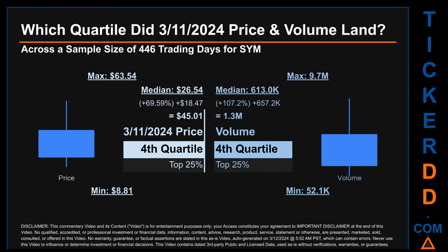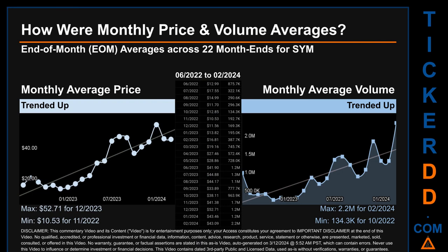Quartiles tell us about the spread of a data set by breaking it into quarters, just like how the median breaks the set in half. Descriptively, SYM has a median price of $26.54. Therefore, the March 11, 2024, price was higher from that middle marker by 69.59%. The day's volume of 1.3 million was more than the median by 107.2%.